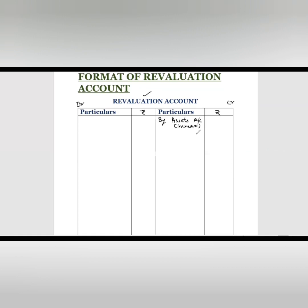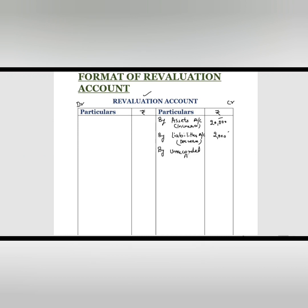For example, if a building of Rs. 30,000 is now valued at Rs. 50,000, there is a Rs. 20,000 increase in building value — we write Rs. 20,000 on the credit side. If there is a decrease in any liability, we write 'By Liabilities Account.' For instance, if creditors are written back by Rs. 2,000, we note Rs. 2,000. Note that we record only the increase or decrease, not the full revised value. If there is an unrecorded asset, we write 'By Unrecorded Asset.' On the debit side, if there is a decrease in any asset, we debit 'To Assets Account.'